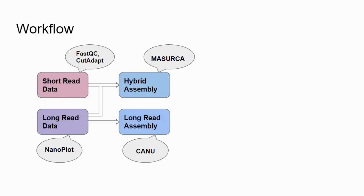We generated two types of assembly. The first is a long-read assembly using only long-read data, for which we used the Canu assembler. The second assembly is a hybrid assembly, for which we used both short-read and long-read data. This hybrid assembly was generated using the Masurca tool.